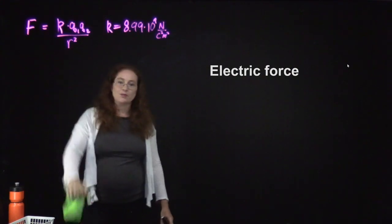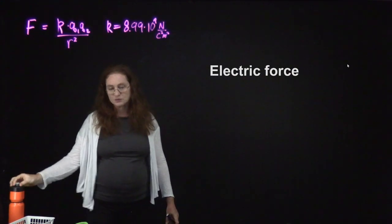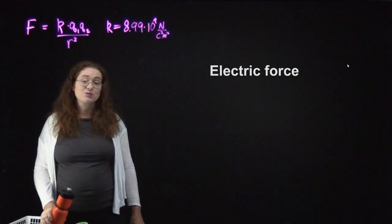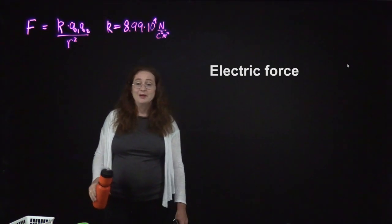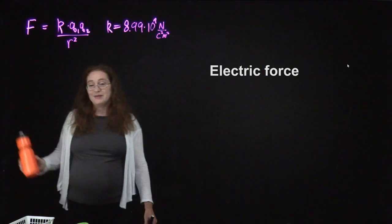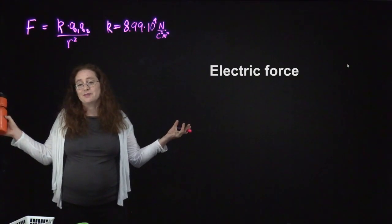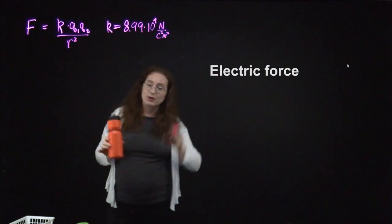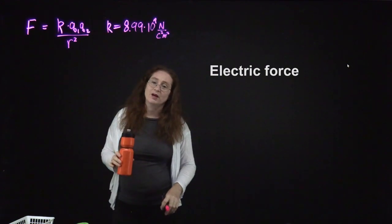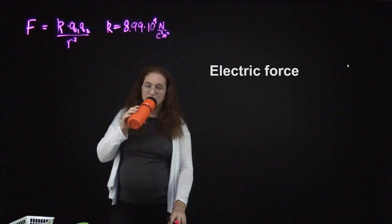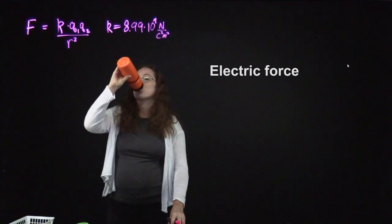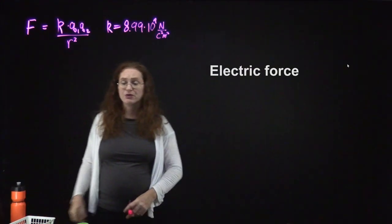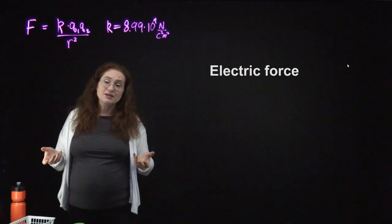Initially we didn't know those two constants were related to each other, but then Maxwell came along and explained electricity and magnetism to us — and then there was light. Now we know those two constants are related to each other.